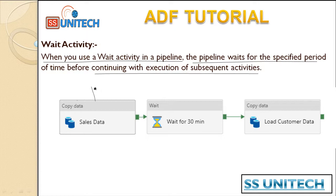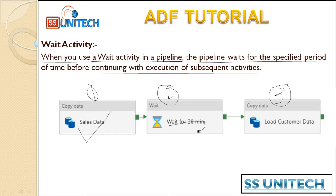In this example we have three activities: the first is the Copy Data activity, the second is the Wait activity, and the third is again a Copy activity. First it loads data into the sales table from the blob storage, and after that it waits for 30 minutes. This is because your sales data arrives before the customer data — sales data arrives first, and after 15, 20, or 25 minutes the customer data will be received. So we load the sales data immediately and load the customer data once it is available. This is the scenario we are going to implement in this video.